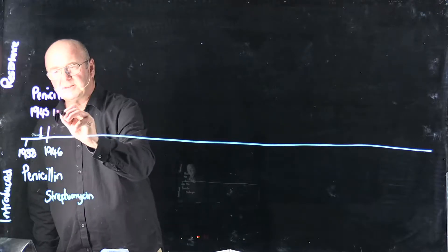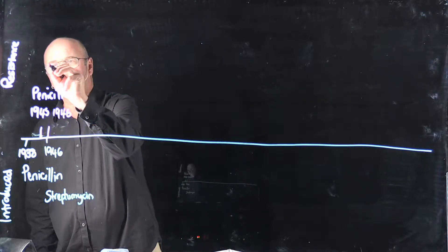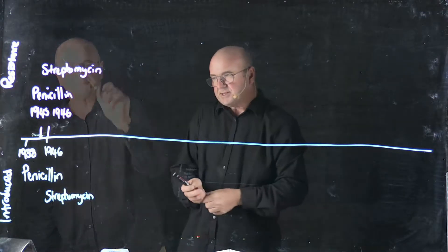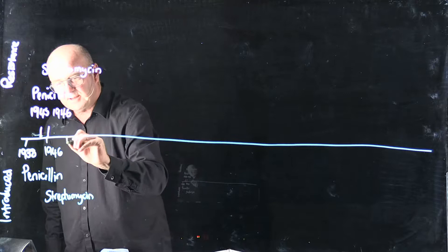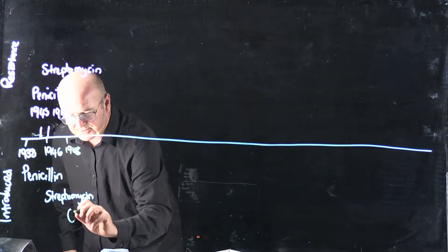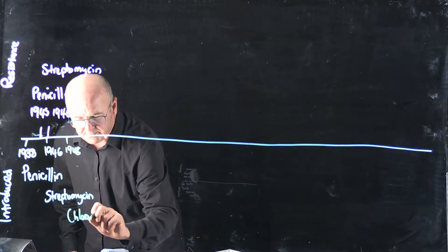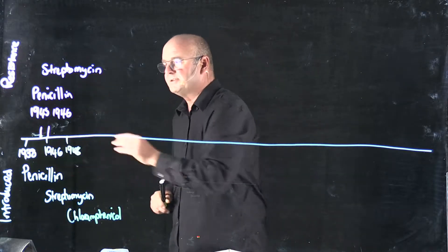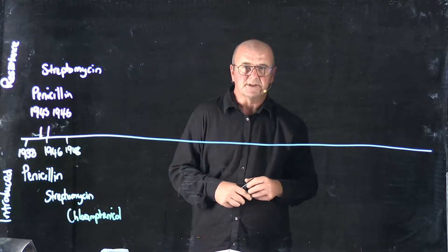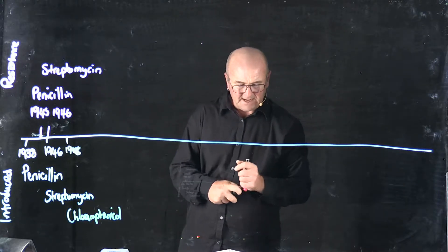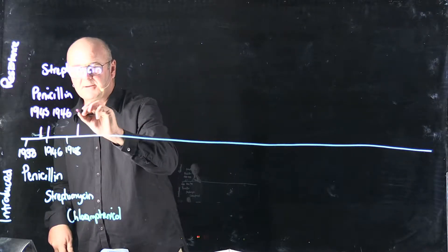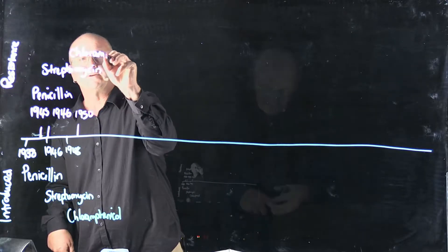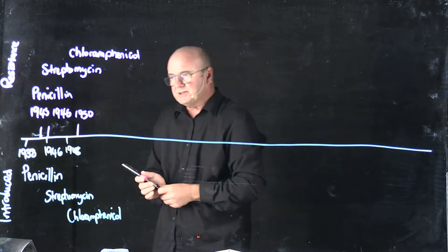In fact, 1946, we had resistance to streptomycin. But that's okay, because in 1948, we introduced chloramphenicol. And so as we're introducing antibiotics, bacteria are introducing resistance. And in fact, chloramphenicol lasted pretty well. It wasn't until 1950 that we had resistance to chloramphenicol. The story keeps going.